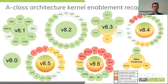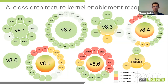For 8.5, we are halfway through the enablement. The main focus is around completing the development of memory tagging and BTI — branch target identification — which are the main security features enabled with the 8.5 extension. A few other features have been enabled already: speculation barriers, the random number generator, and a few other items I will mention later on.